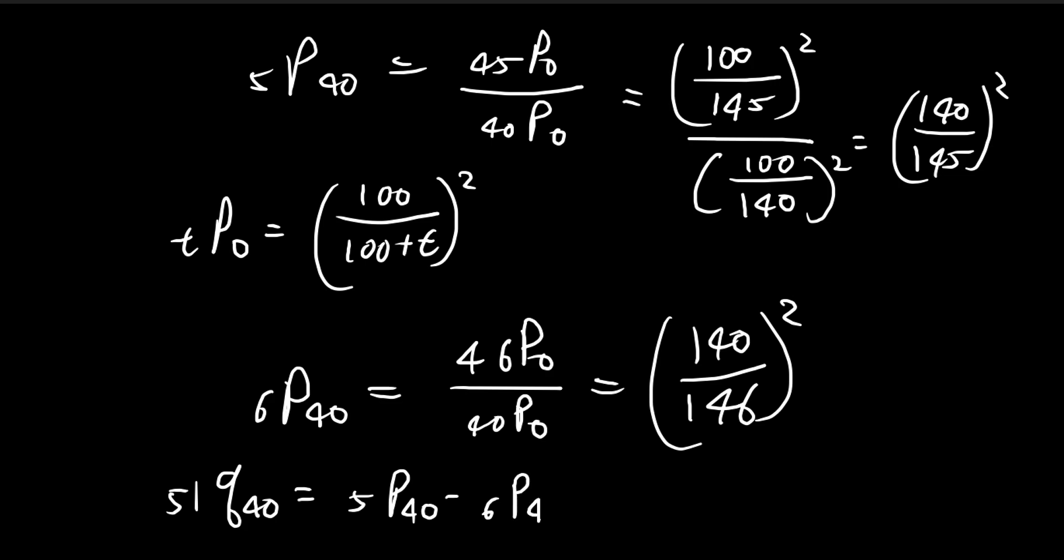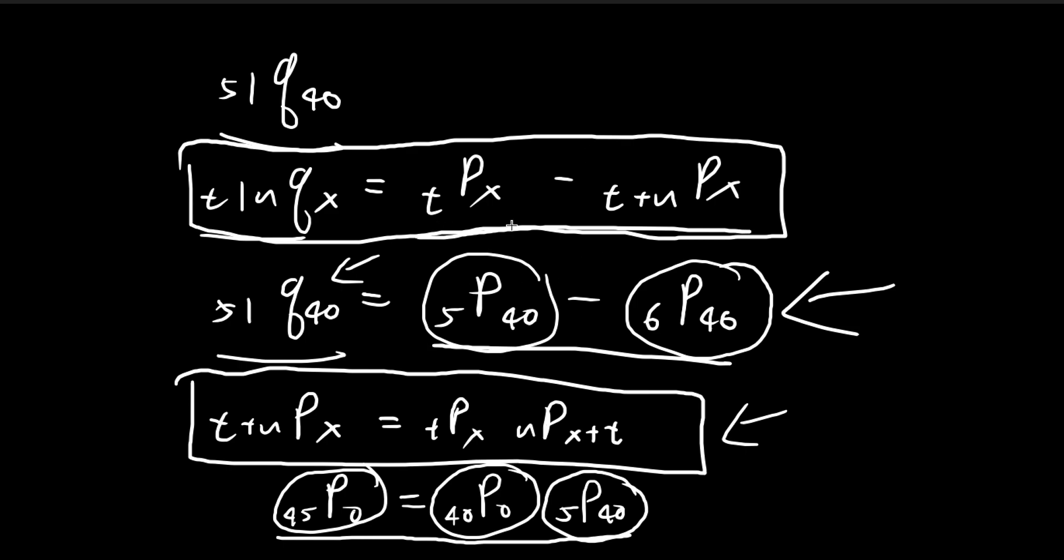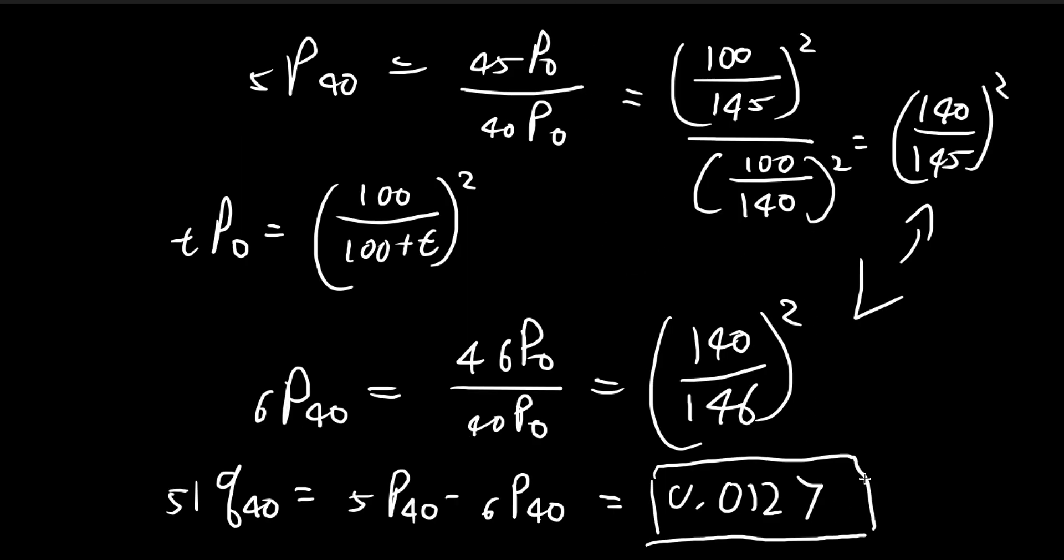All you have to do is take the difference between these two terms and plug it into your calculator. You'll find that this equals 0.0127. This is how you can apply actuarial notation to arrive at your answer.